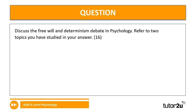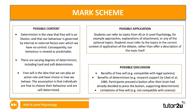Looking at the mark scheme for this 16-marker: for AO1 content, define both free will and determinism to show knowledge of both. Demonstrating deeper knowledge through illustrative examples is also an option. There are varying degrees of determinism — hard and soft determinism, psychic, biological, and environmental determinism. You wouldn't need to define all of these; it's always about being selective with your material.